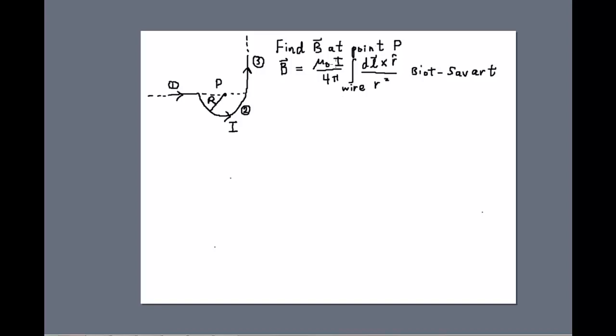We'll indicate on the sketch again what these terms look like for each of the current segments. Remember the dL vector points in the direction of the flow of current and then the R hat vector points from the current element towards the point where we're trying to find the field, in this example towards point P.